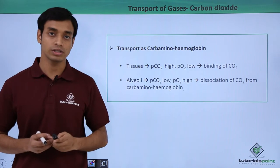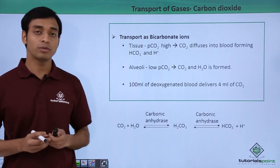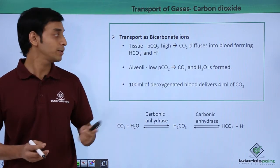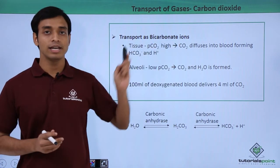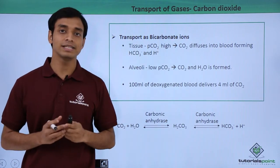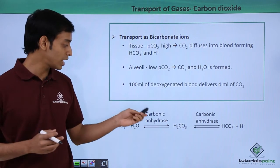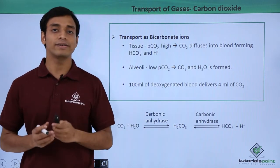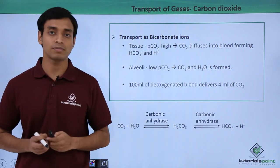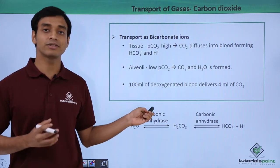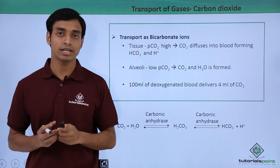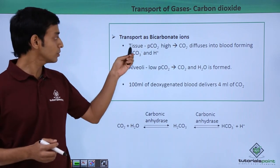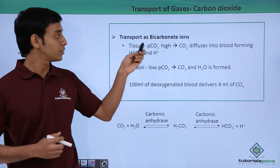Now let's study the second form in which carbon dioxide is transported within the body: as bicarbonate ions. Within our RBCs there is a large amount of an enzyme known as carbonic anhydrase, which is also present in very small amounts in the plasma. This enzyme plays a very important role in transporting carbon dioxide in the form of bicarbonate ions.